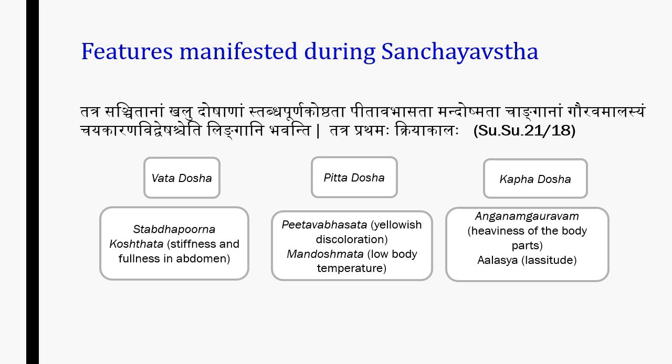Vata Sanchay causes Stabdha Prakopa in Grishma Ritu, meaning stiffness and fullness of abdomen. Pitta Sanchay results in Pitabhasa, meaning yellowish discoloration, Mandoshmata, i.e. low body temperature or low digestive power. Kapha accumulation leads to Anganamagarva, meaning heaviness of body parts, and Alasya, meaning laziness.